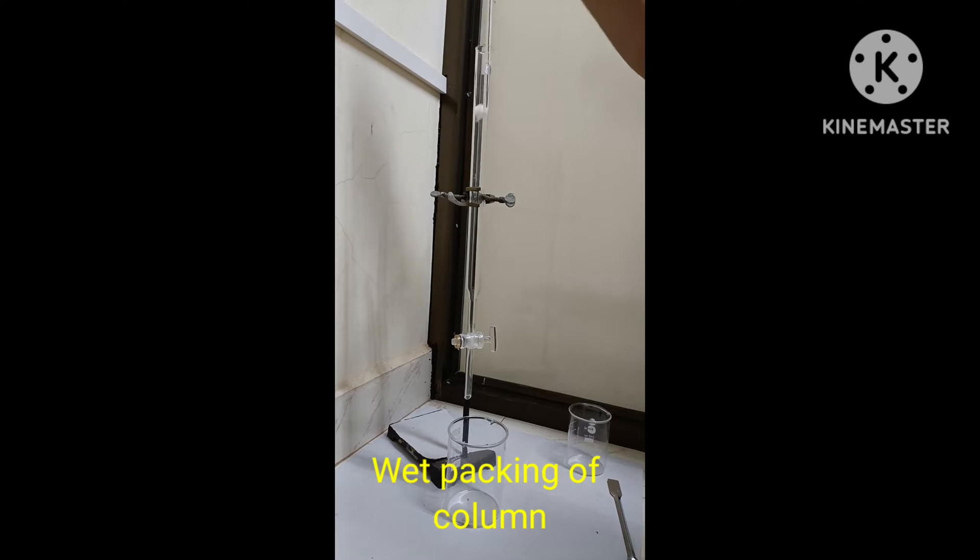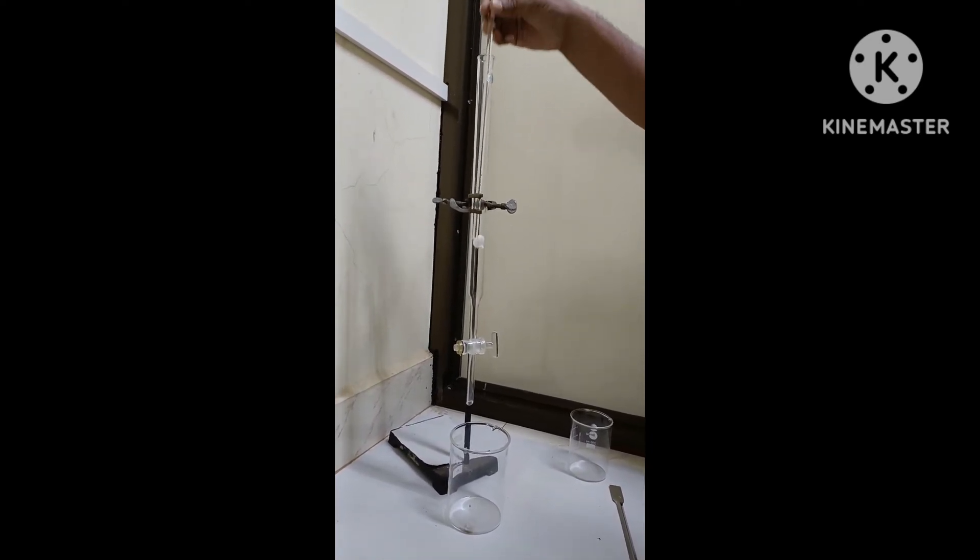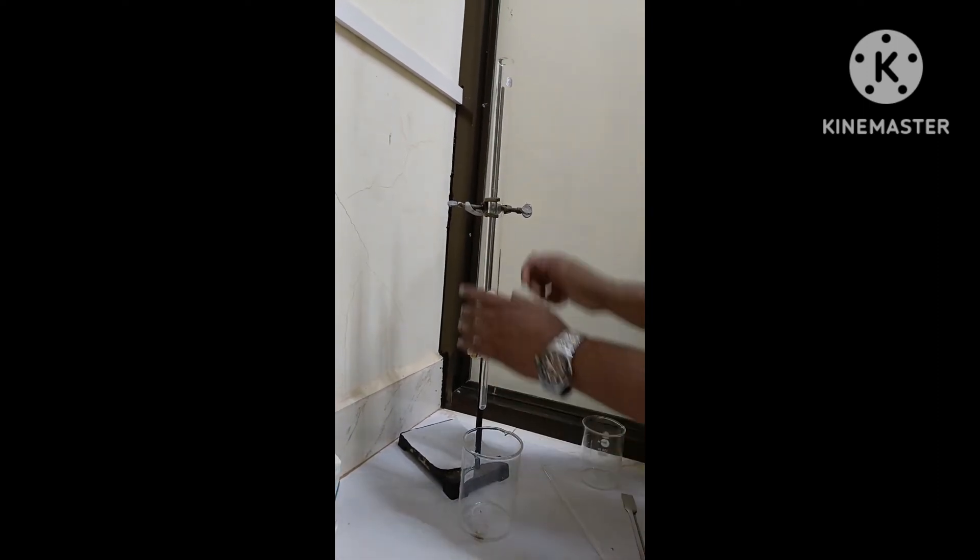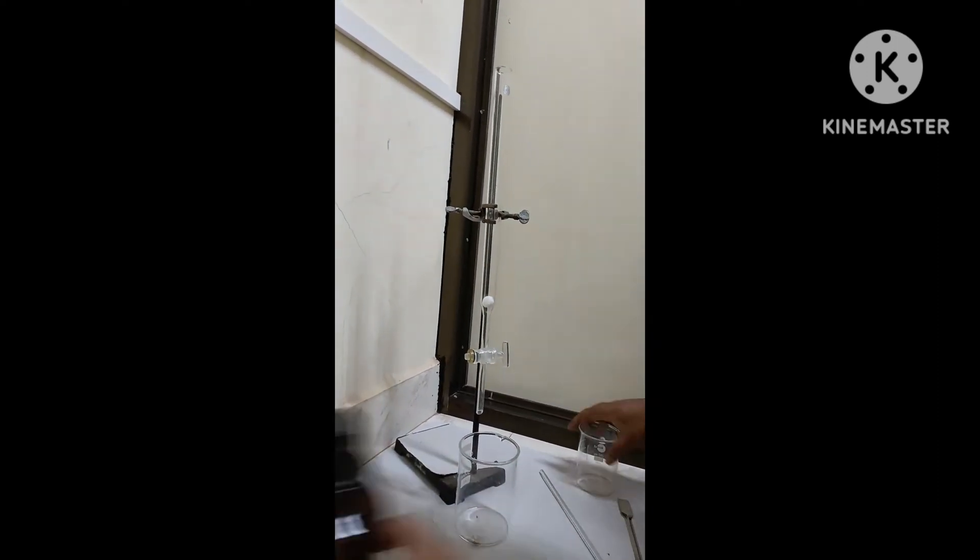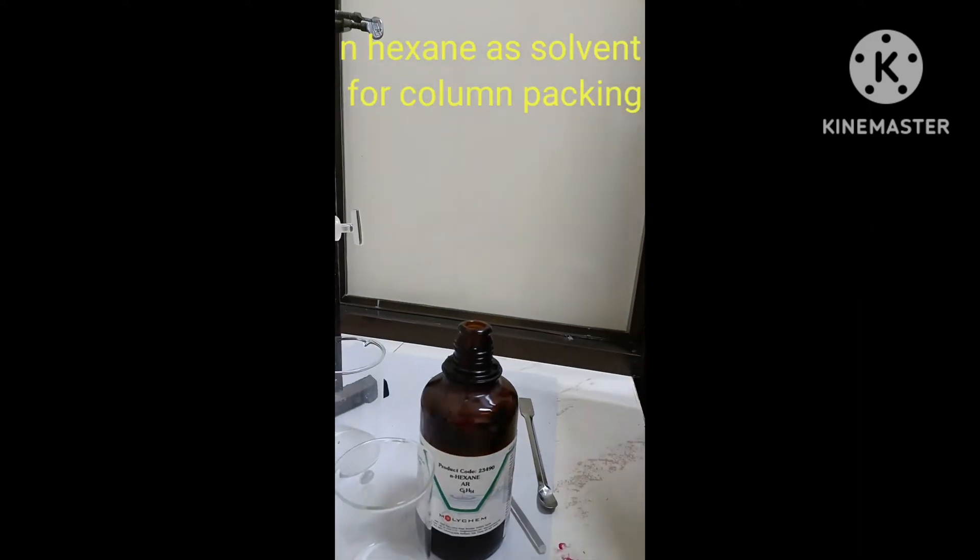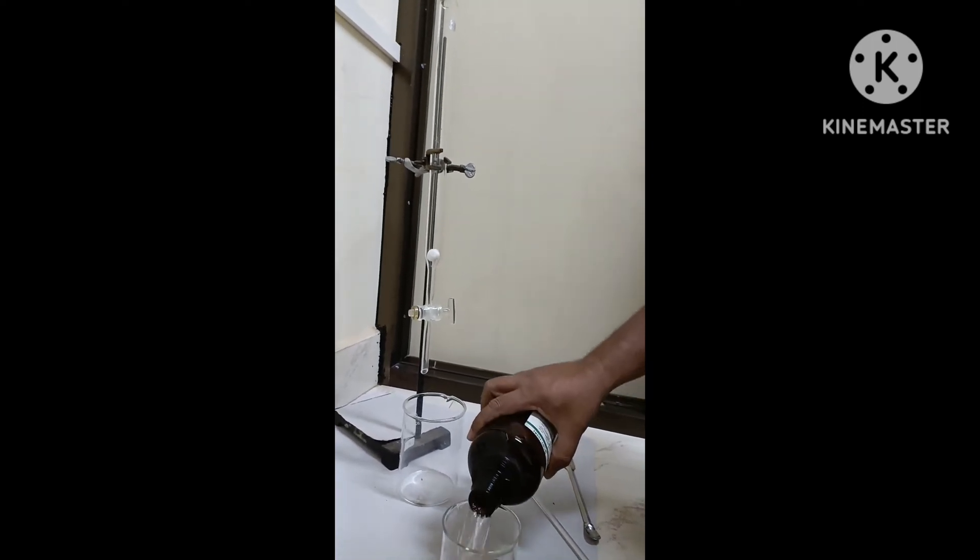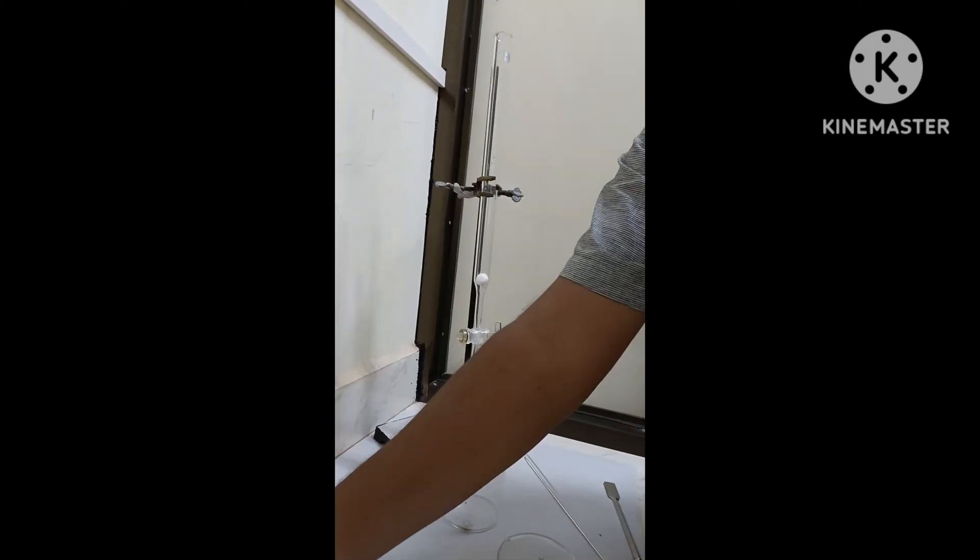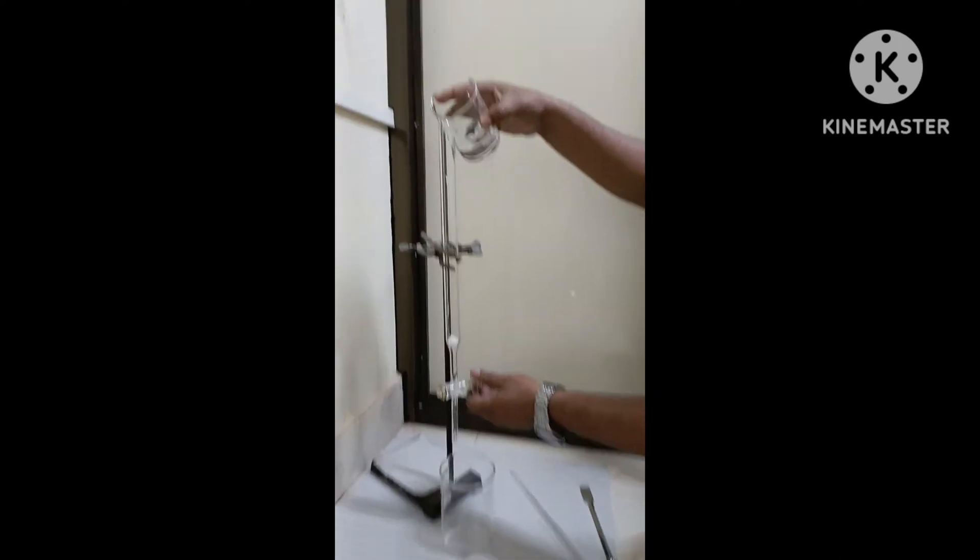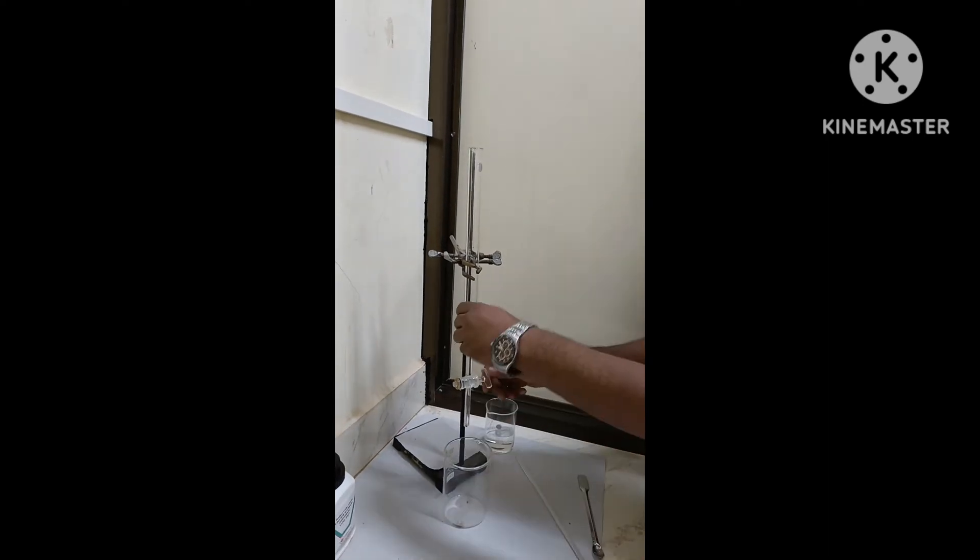Now we can pack the column using silica gel. We are inserting the cotton plug so that it can hold the stationary phase in the column. This column packing is by wet column packing method and we are going to do gradient elution where we will pack the column in n-hexane and then gradually increase the polarity using acetone.